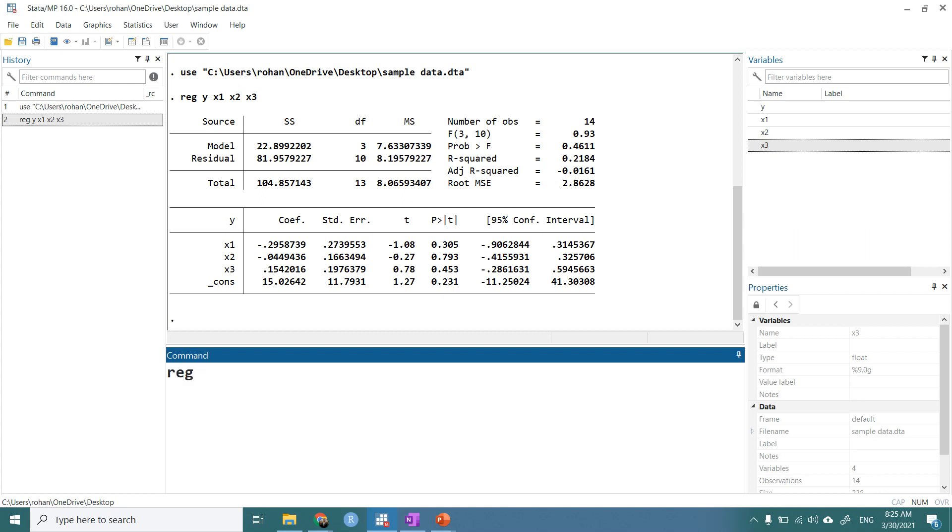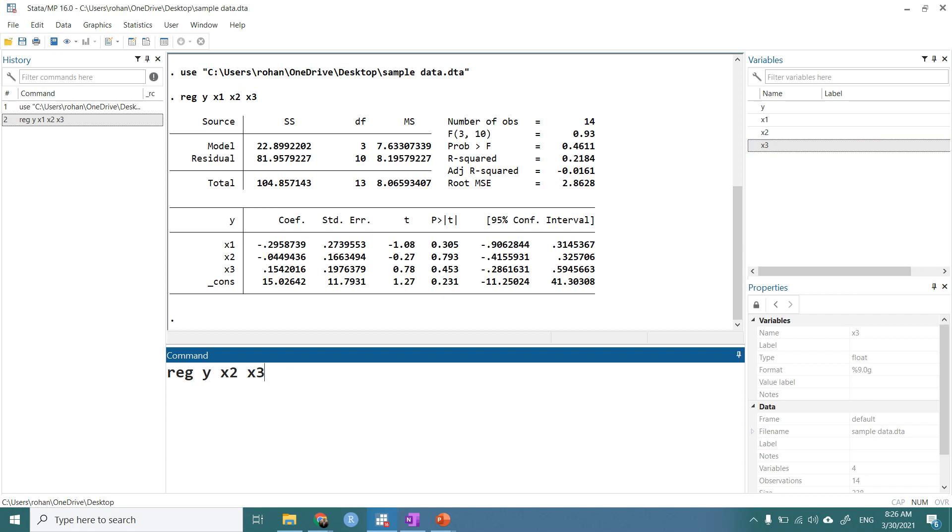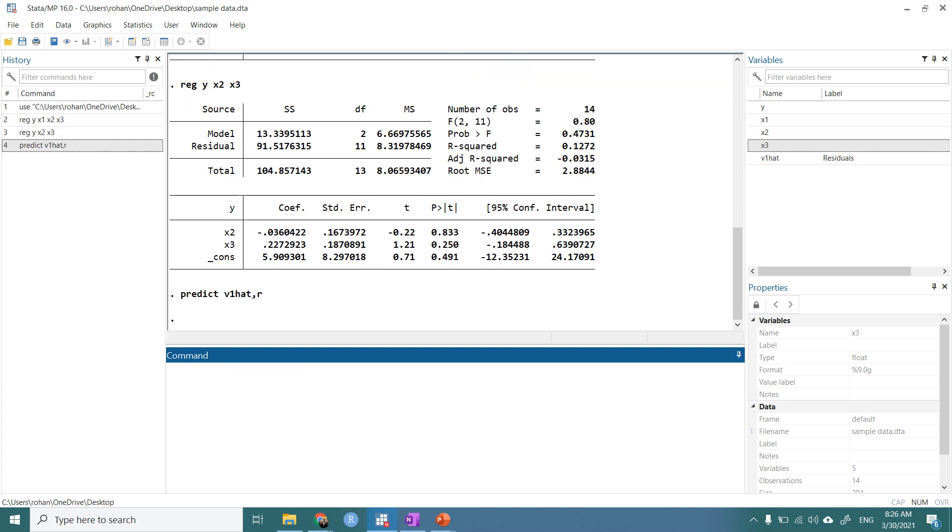We will net off the effect of x2 and x3 from y. To do it, let's take y, x2, and x3. And we will save its error term, so we will save it as predict v1 hat, comma, residual. So we'll predict v1 hat.